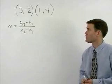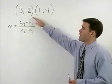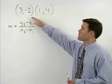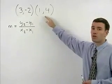In this problem, we're asked to find the slope of the line that passes through the points 3, negative 2, and 1, 4.